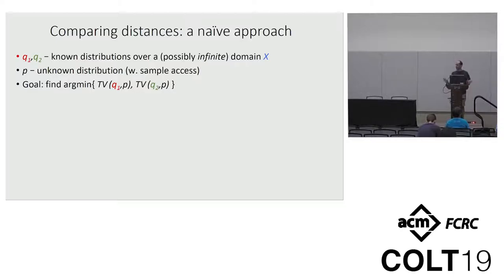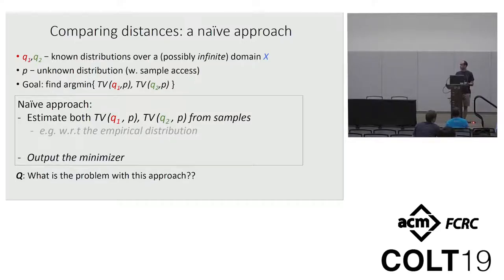So here is what I thought when I first heard about this problem: we simply estimate both the total variation of Q1 and P and total variation of Q2 and P, and then we just output the one that minimized the estimates. And what is the problem with this approach?